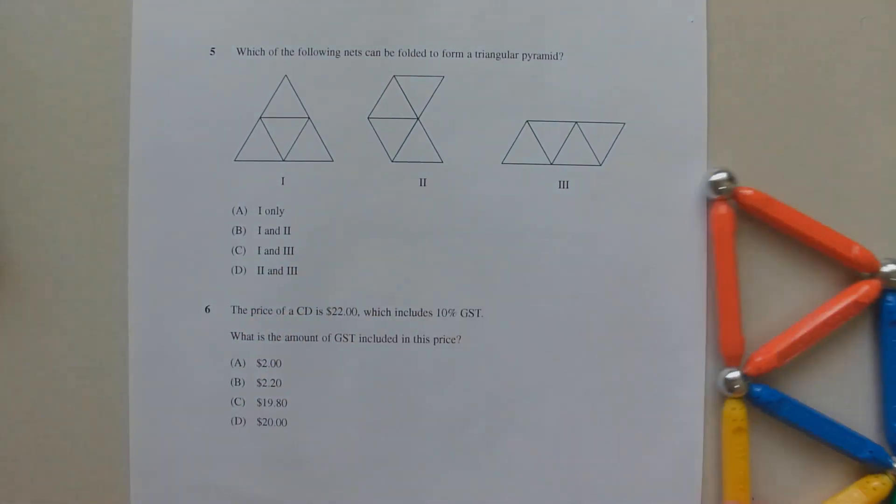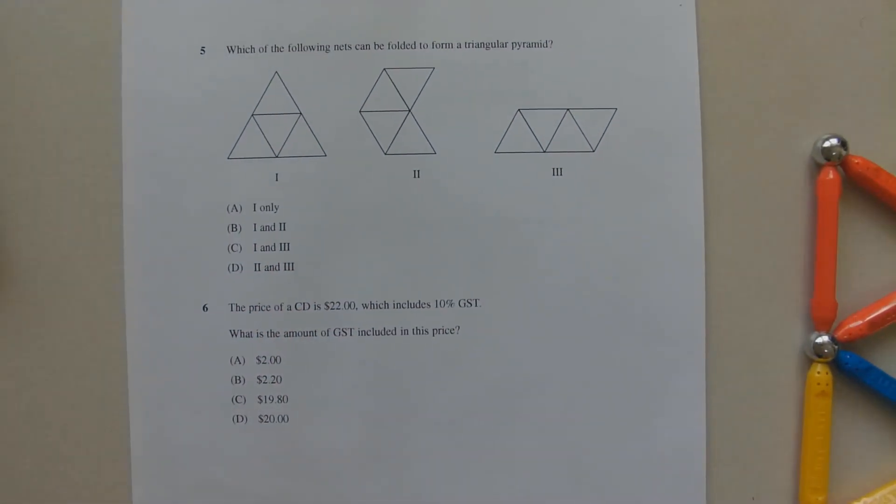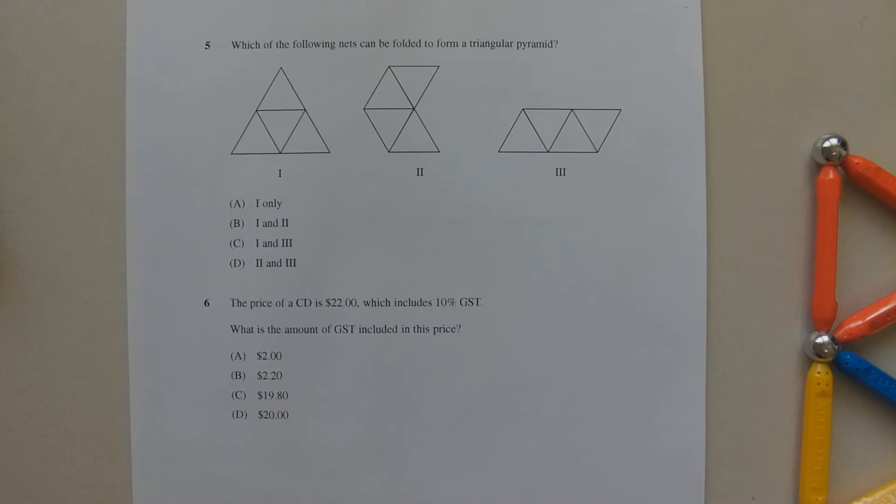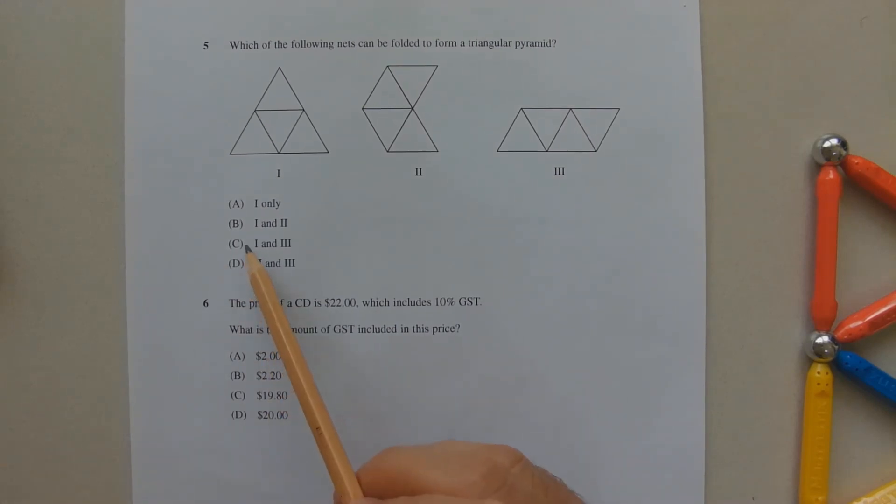So net number three is a valid net for a triangular pyramid. Therefore the answer is option C.